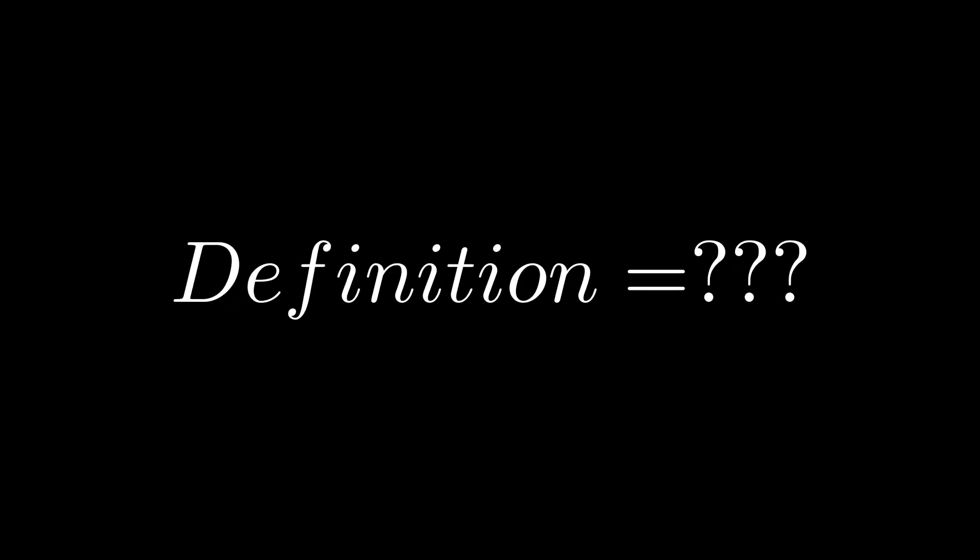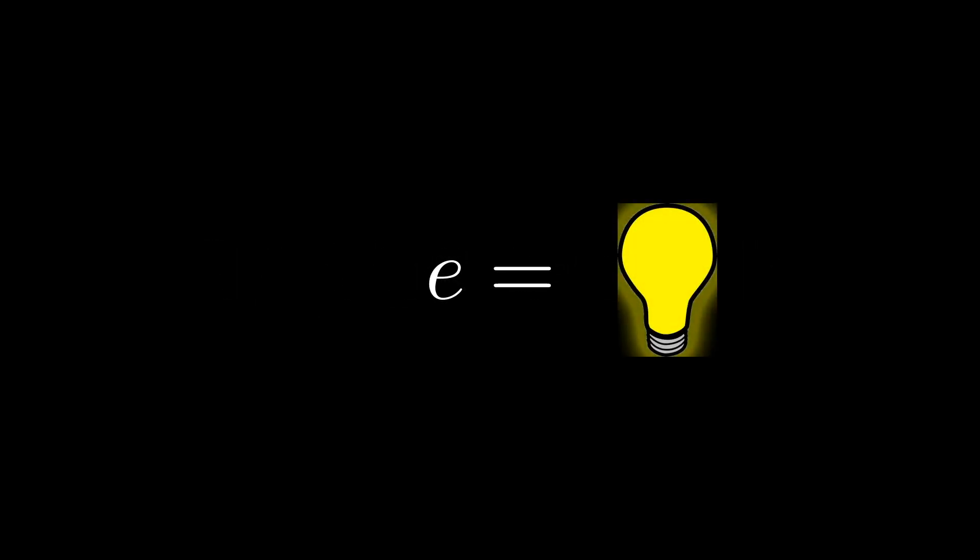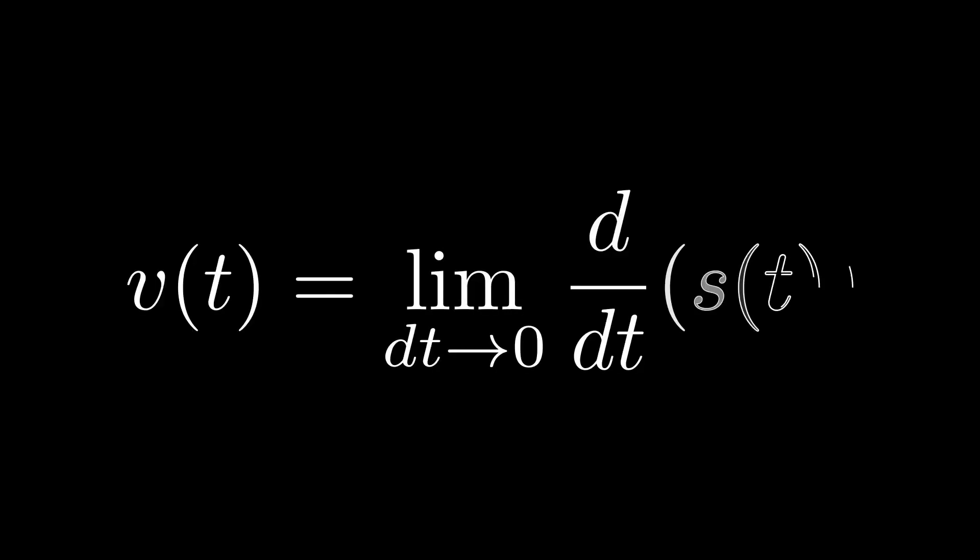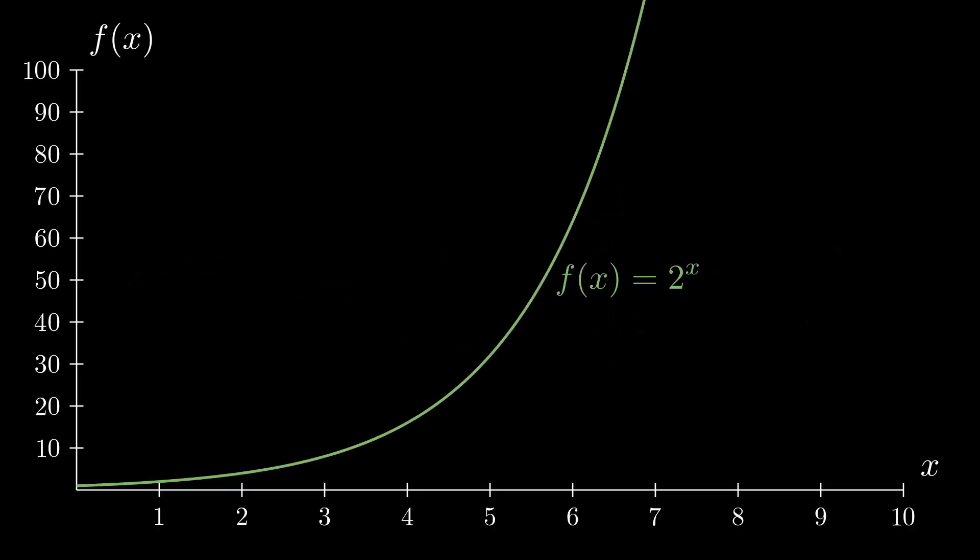This brings up the question of what this constant stands for and what we can actually do with it. My goal today is to help you understand what this 2.71828 stands for, but more importantly, I want to give you a general intuition for what a derivative is and how this number relates to the derivative of exponential functions like 2 to the x.